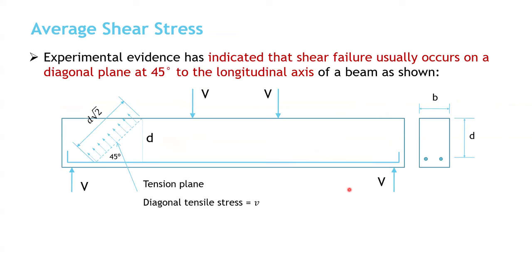Let's now move to the average shear stress. Experimental results show that shear failure usually occurs at a diagonal plane at 45 degrees. So if this distance from the compression side to the center of the tension steel is D, the shear plane will be inclined at 45 degrees, meaning the inclined distance will be D times the square root of 2. At this plane, we have diagonal tension stresses, called v small, applied over this length and the beam width.